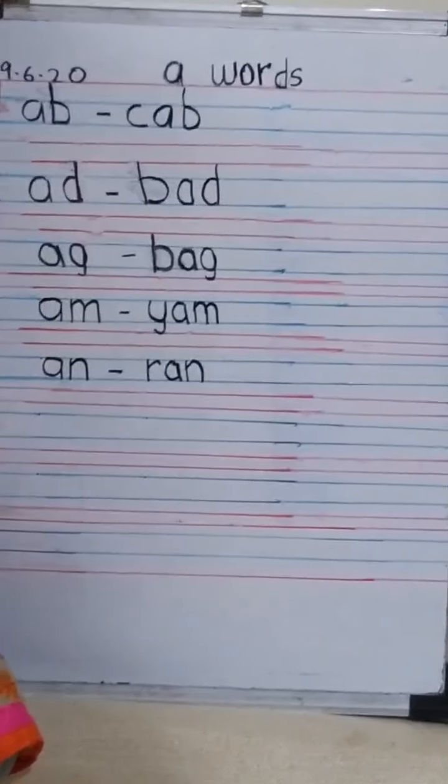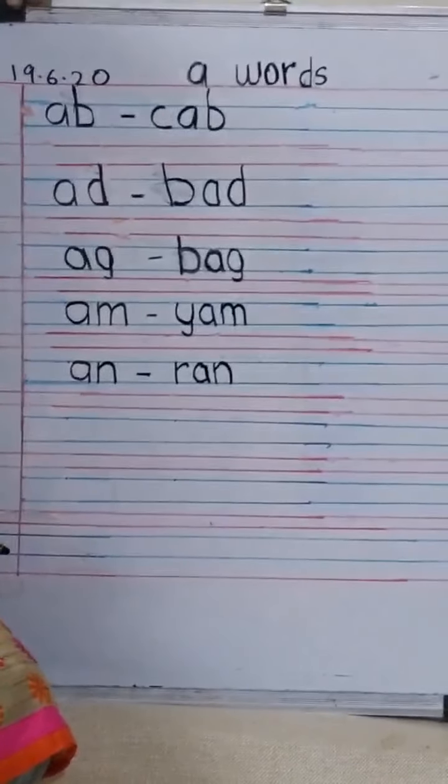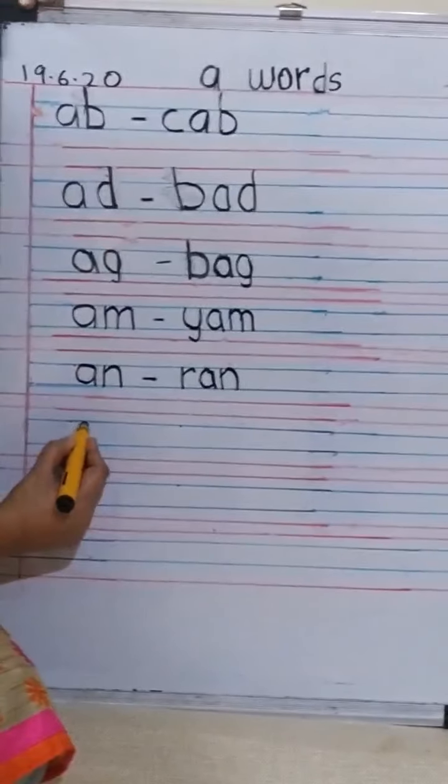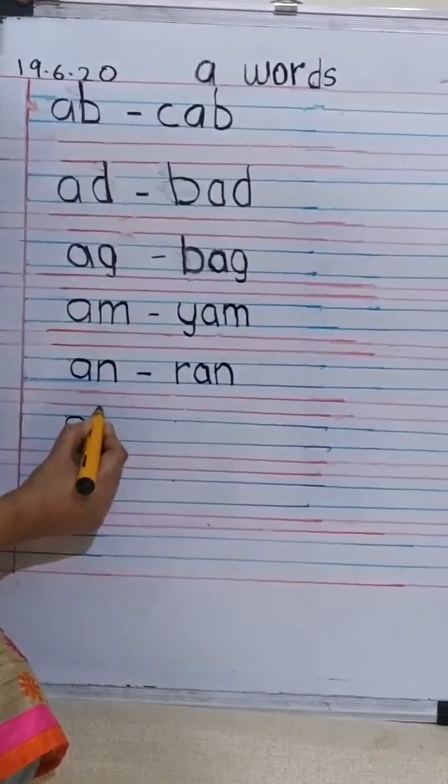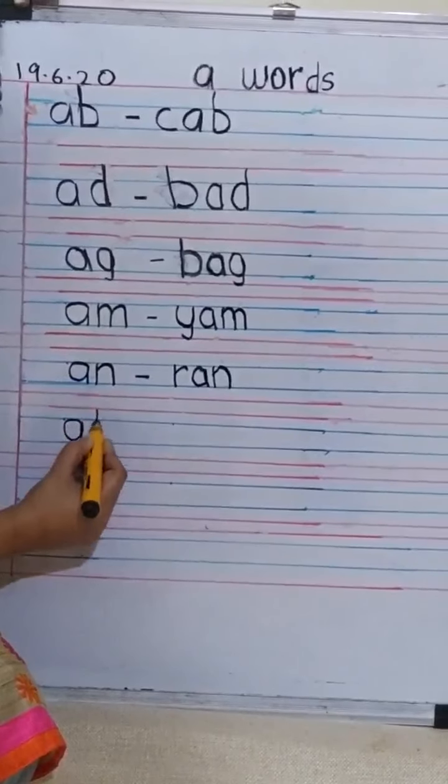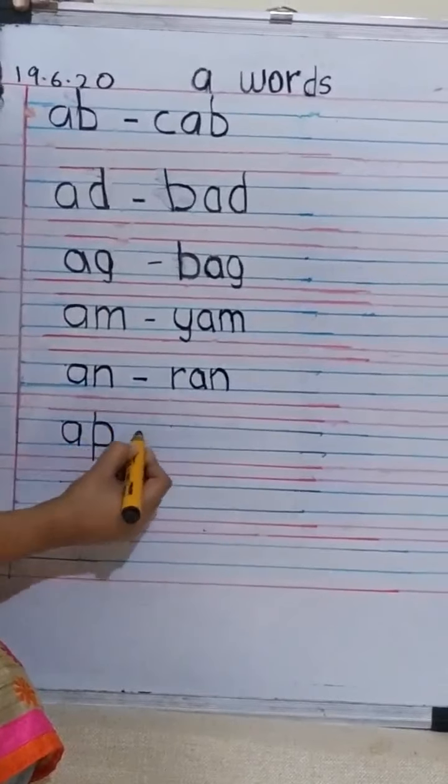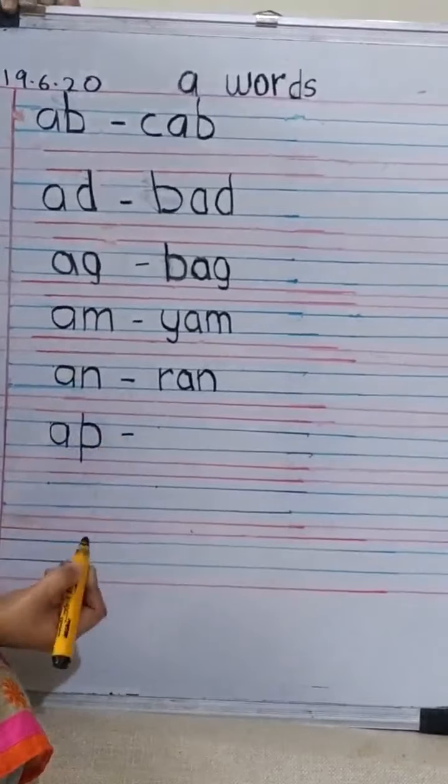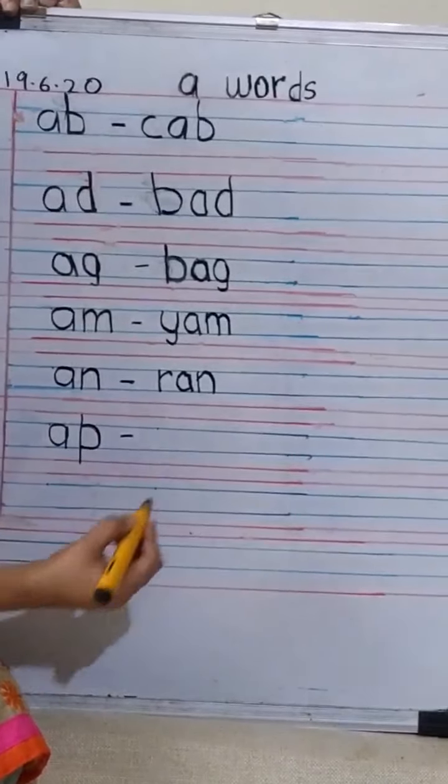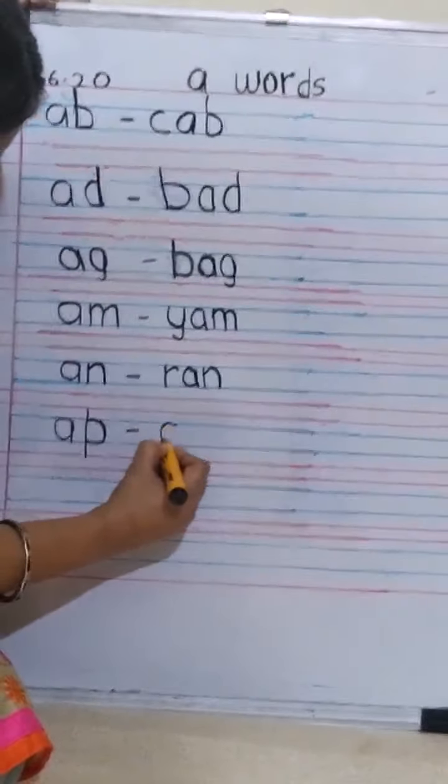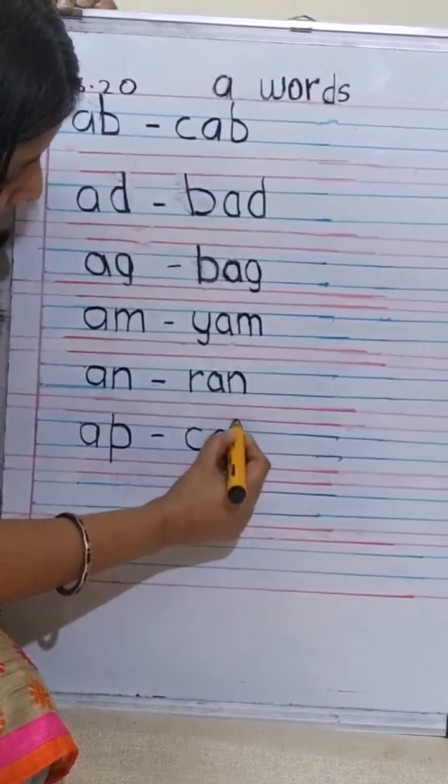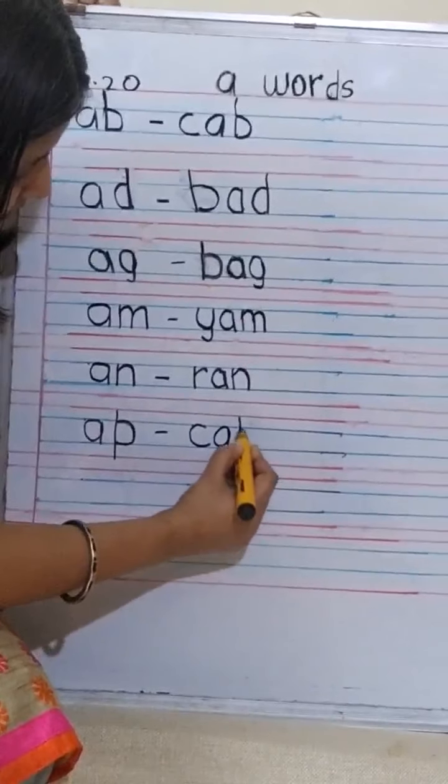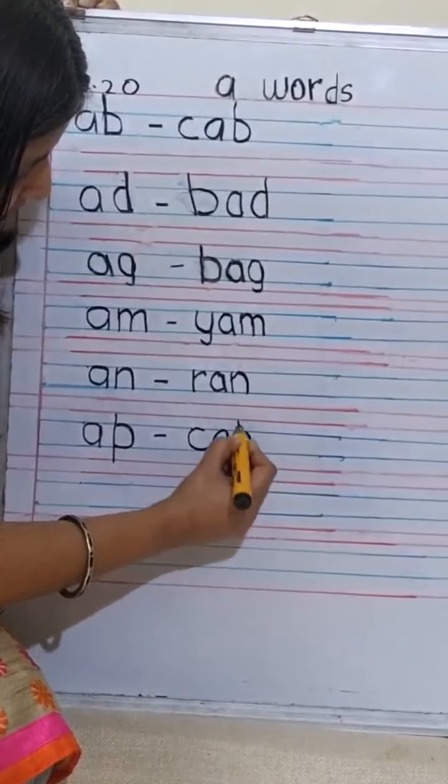RAN. The next one we are going to write is AP. A and a P. AP, give a small dash, and then we will write a CAP. C, A, and a P. CAP. Yes.